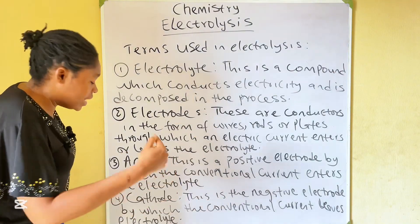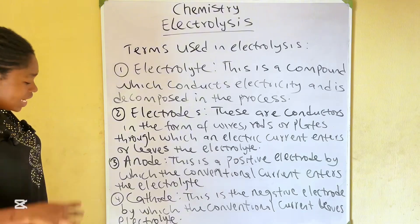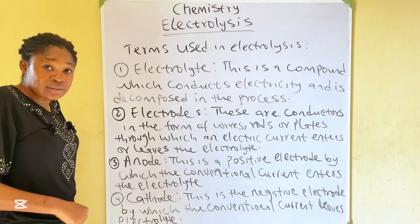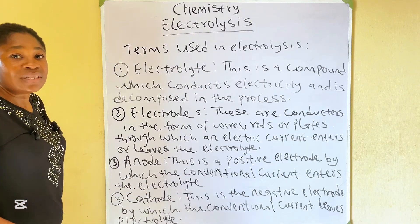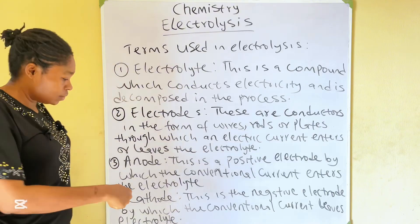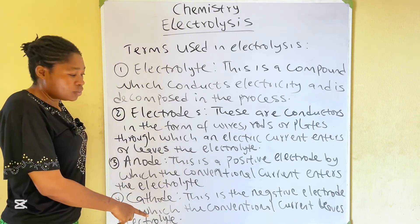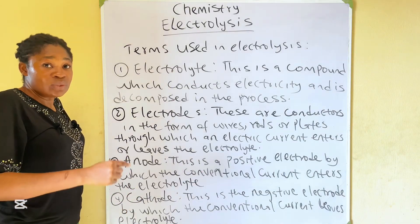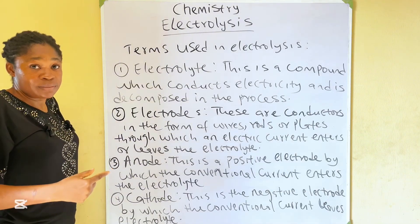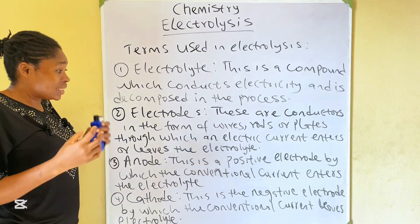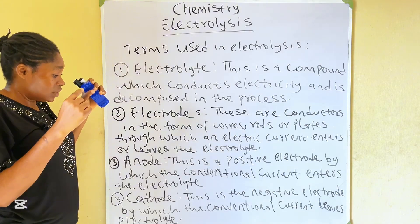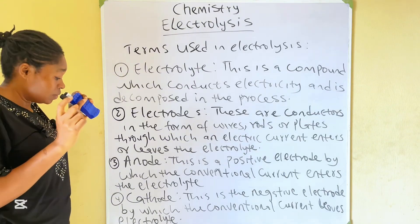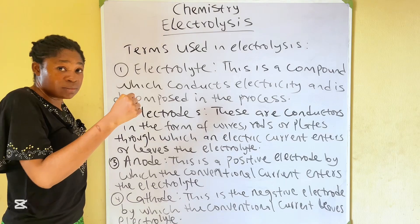Cathode. This is the negative electrode by which the conventional current leaves the electrolyte. Current leaves the electrolyte through the cathode, and electrons enter the electrolyte through the cathode. It is the negative electrode which is joined to the negative terminal of the electric supply — so the negative terminal of the battery is joined to the cathode.